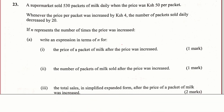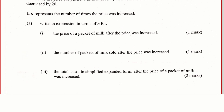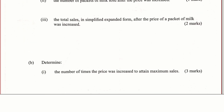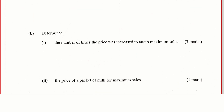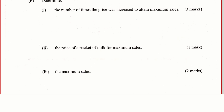Question 23. A supermarket sold 530 packets of milk daily when the price was 50 shillings per packet. Whenever the price per packet was increased by 4 shillings, the number of packets sold daily decreased by 20. If n represents the number of times the price was increased, write an expression in terms of n for: (1) the price of a packet of milk after the price was increased, (2) the number of packets of milk sold after the price was increased, (3) the total sales in simplified expanded form after the price of a packet of milk was increased. Part b: determine (1) the number of times the price was increased to attain maximum sales, (2) the price of a packet of milk for maximum sales, and (3) the maximum sales.